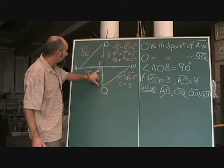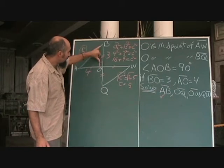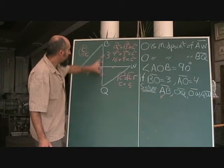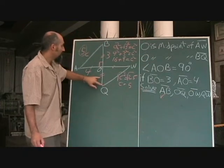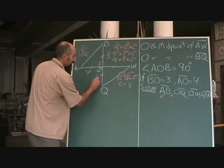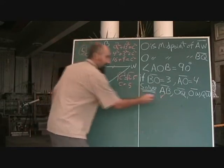Now this one is going to be easy because they told us that this is equal to this. Where did they tell us this? In the second part: O is the midpoint of BQ. So if this is equal to this, then this has got to be 3. So we just solved for this one.